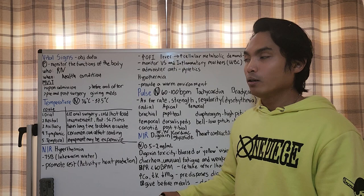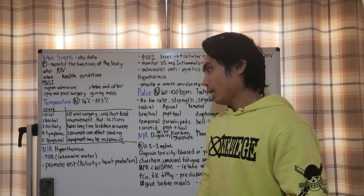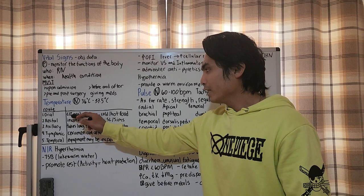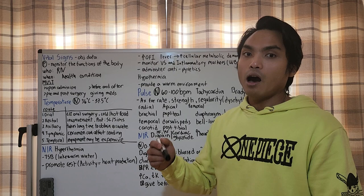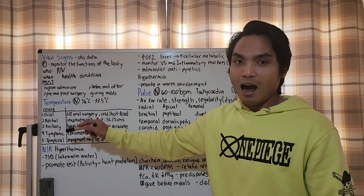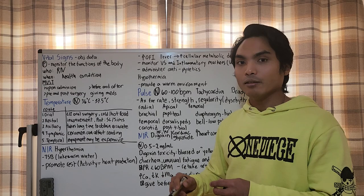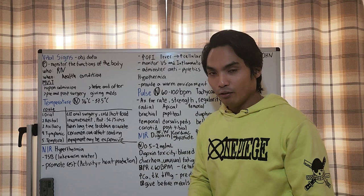There are five routes for temperature. Oral is the most accessible, although contraindicated during oral surgery and if the client just had cold or hot food. Rectal route is the most accurate, although inconvenient, and the client position should be side-lying or Sims position. Axillary is the safest and takes a long time to obtain accurate results.